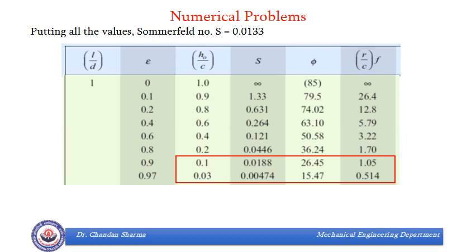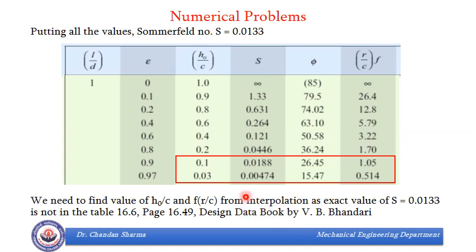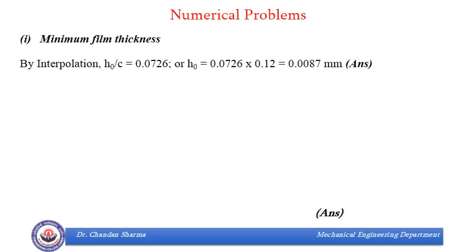Now, referring to the same Raimondi and Boyd table, we find that we don't have exact value of S as 0.0133, because we have got S as 0.0188 and 0.00474. So our S is lying somewhere in between these two values. That means, we need to take help of interpolation, to find what would be H0 by C for this S and other parameters, F R by C. So by interpolation, we will find H0 by C and F R by C, because H0 is unknown to us, and F is also unknown to us. By interpolation, our H0 by C was 0.0726, and we already know what is C, so we can find H0, it is 0.0087 mm, which is required answer.